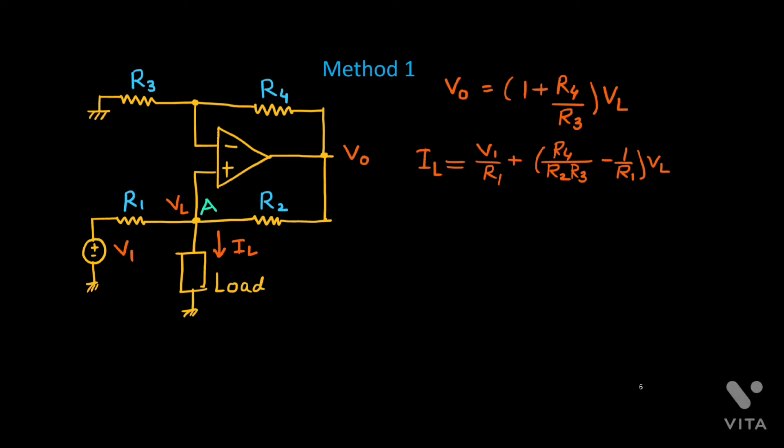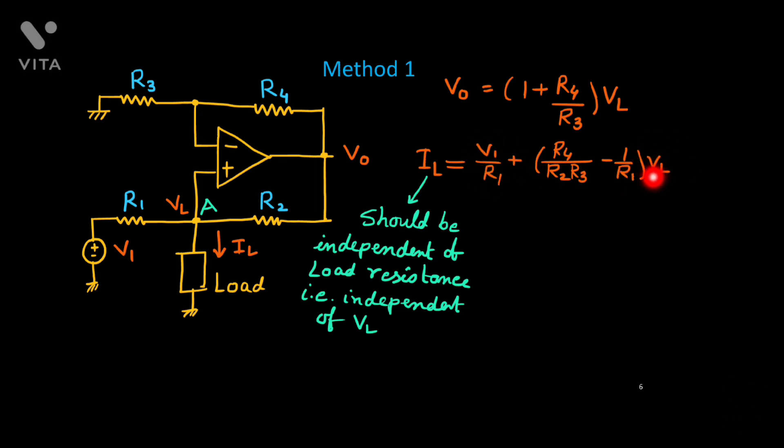Now our objective is to find the constant current. You want that IL should be independent of load resistance. If it is independent of load resistance, obviously it should be independent of load potential VL. Here you will see this IL is having two components. One component is proportional to V1 and other one is proportional to VL. So we have to make this part zero.